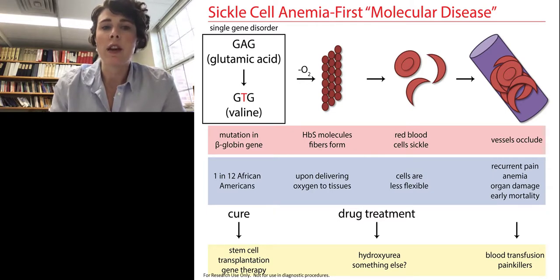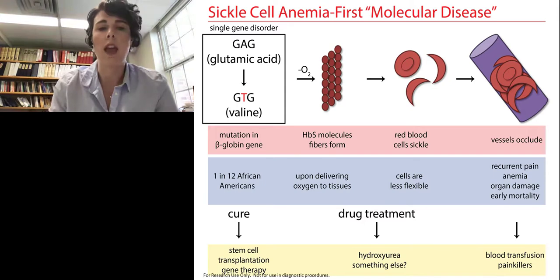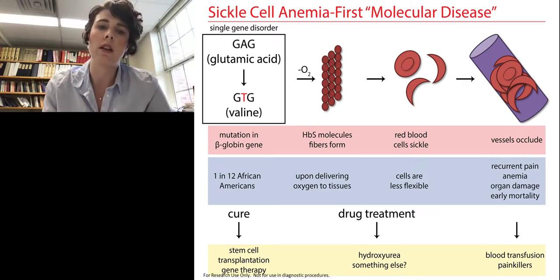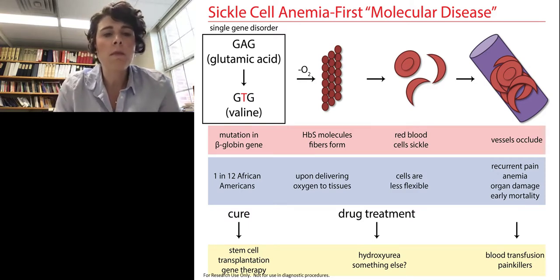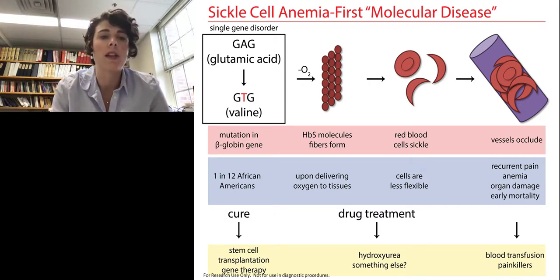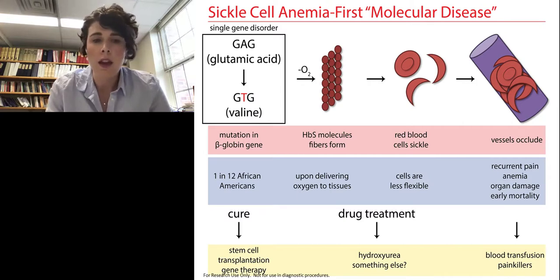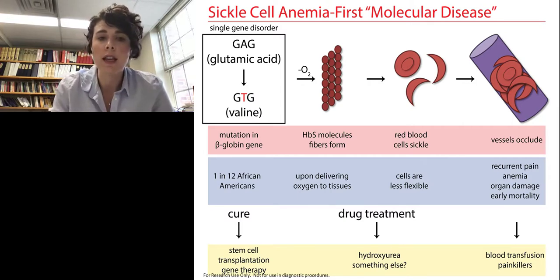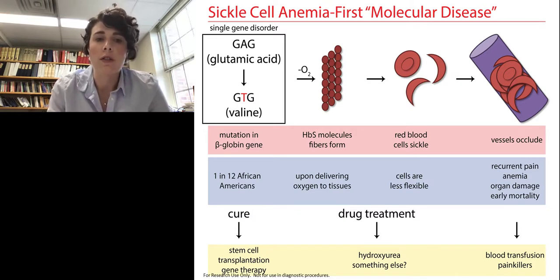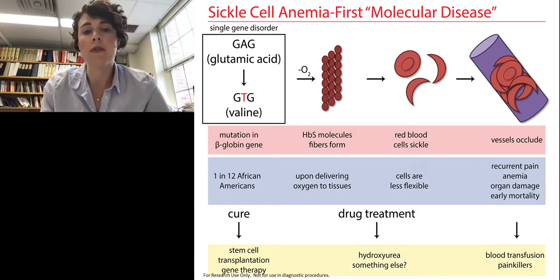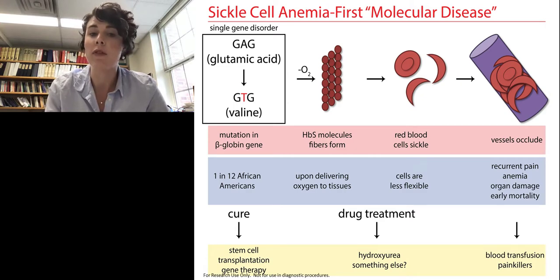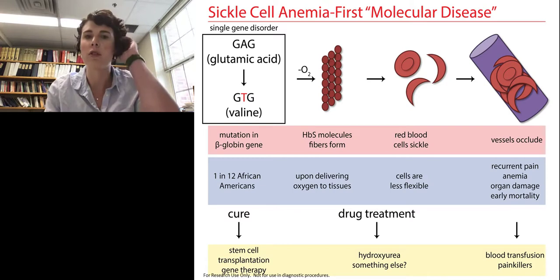Those red blood cells sickle. They go from a biconcave disc shape to a sickled shape, and the resulting cells are less flexible, more rigid, and cause vasoocclusion. Vasoocclusion causes recurrent pain, anemia, organ damage, and early mortality. Some groups at NIH are working towards curing the disease through stem cell transplantation and gene therapy. In our group, we are looking to find a new drug to treat the disease. Currently, there's one drug on the market called hydroxyurea that works in about 50% of people with the disease.